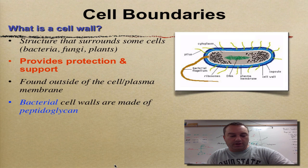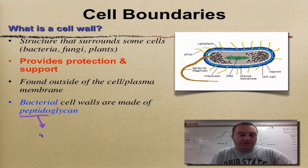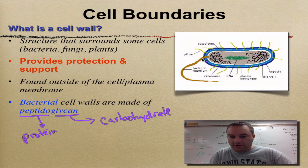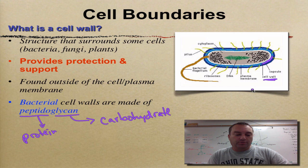Now, bacterial cell walls are made up of a molecule called peptidoglycan. The word peptidoglycan is trying to tell you what it's made out of. 'Peptido' — think of peptide — means that it's got some protein in it. And 'glycan' refers to glycogen, which is a type of carbohydrate. So this is made out of protein and carbohydrates. If you look over here on this picture, the light blue area right in here is the cell wall. It's going to give that cell some protection and a little bit of support.